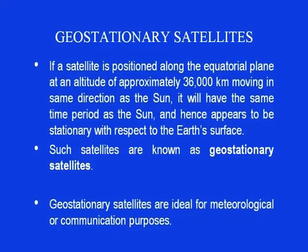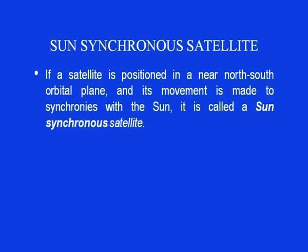Geosynchronous satellites are ideal for meteorological and communication purposes. The second category is the sun-synchronous satellite. If the satellite is positioned in a near north-south orbital plane and its movement is synchronized with the sun, it is called a sun-synchronous satellite.